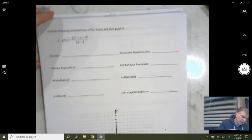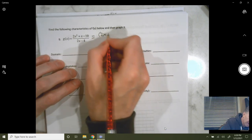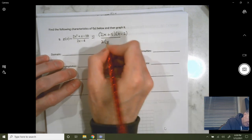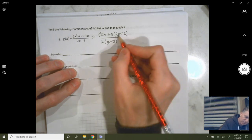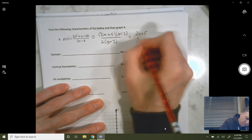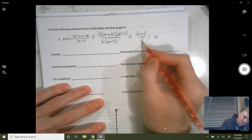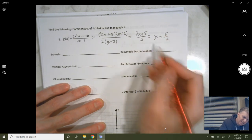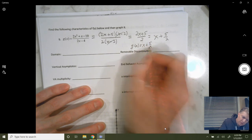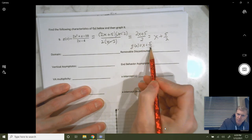This one is similar to one we went over in class. This thing factors, and it factors into 2x plus 5 times x minus 2 over, I'm going to factor out of 2, 2 times x minus 2. And what do you know, those cancel, so there's going to be a removable discontinuity when x is 2. But this simplifies to 2x plus 5 all over 2. You can further simplify that into 2x over 2 is just x. 5 over 2 is 5 halves. So this means your function really just simplifies into a linear function with a slope of 1 and a y-intercept of 2.